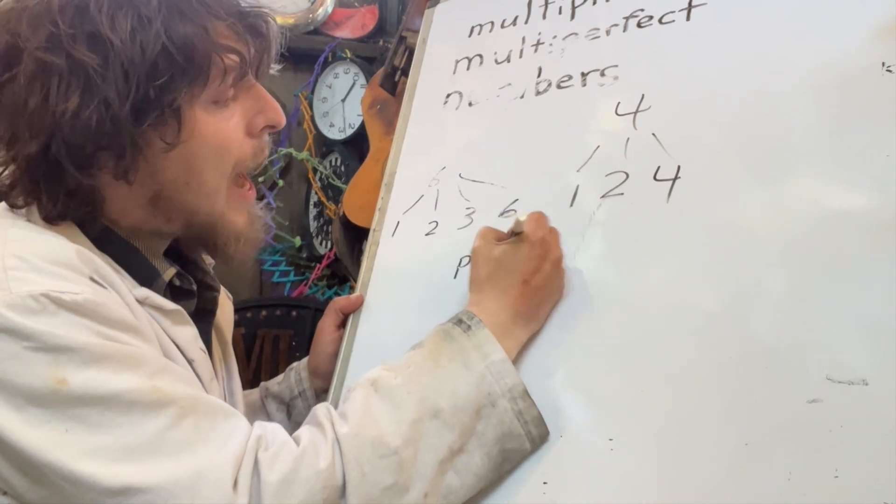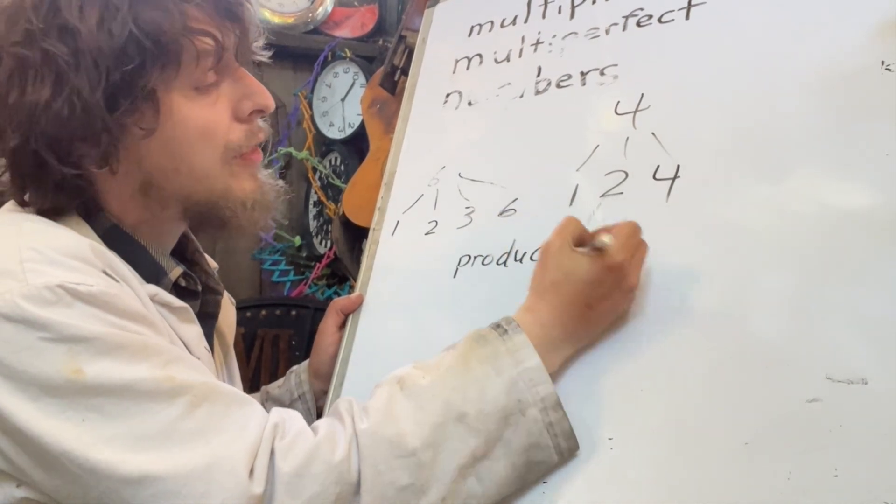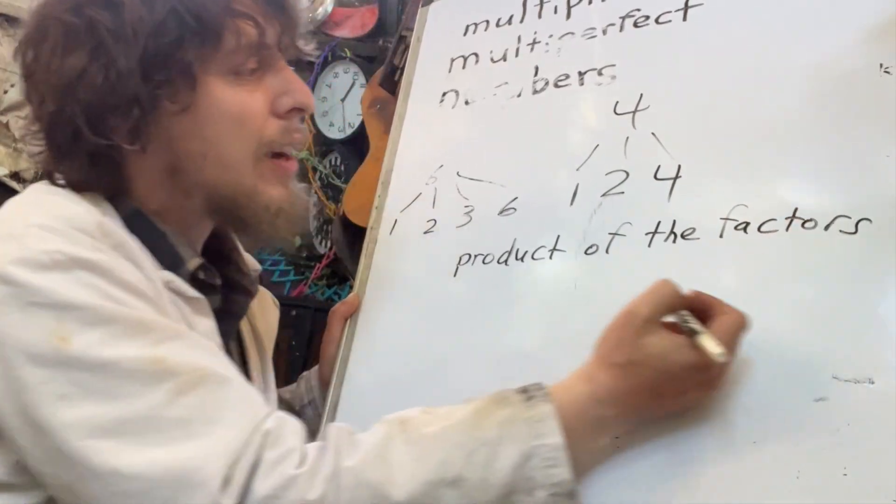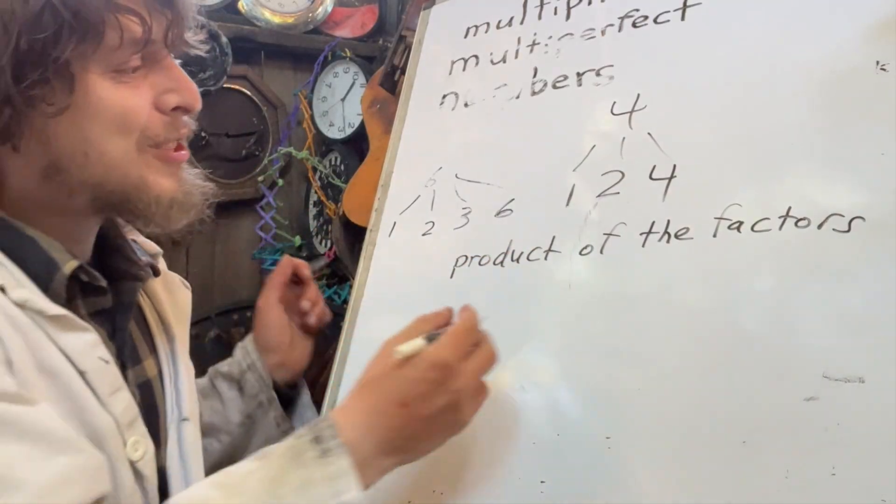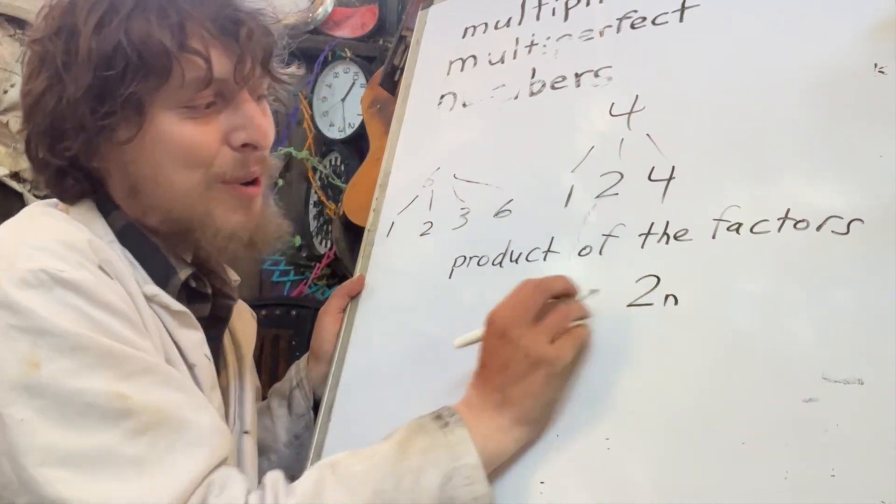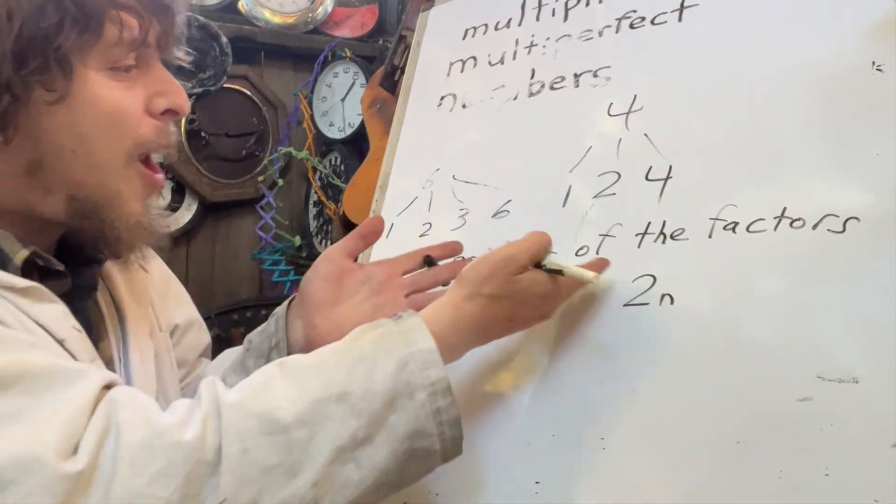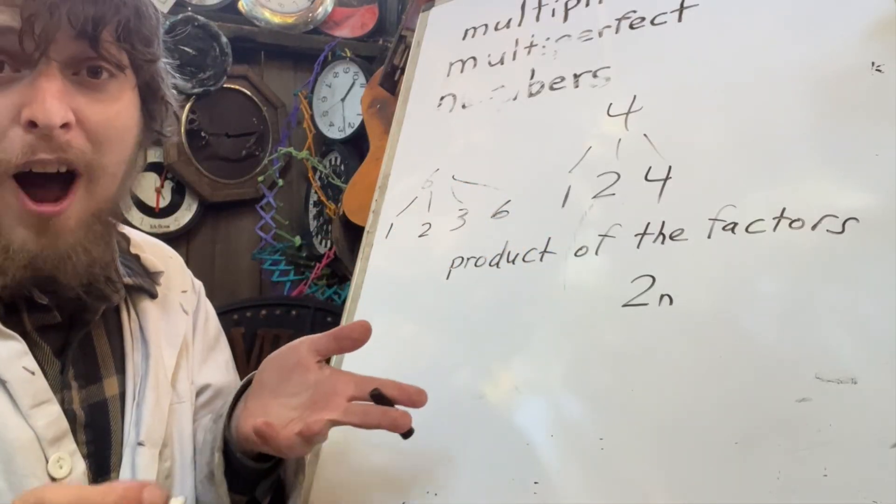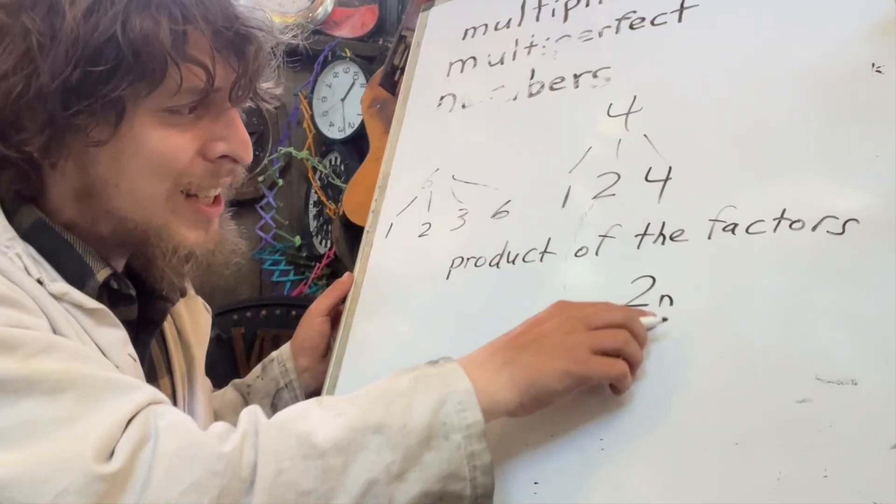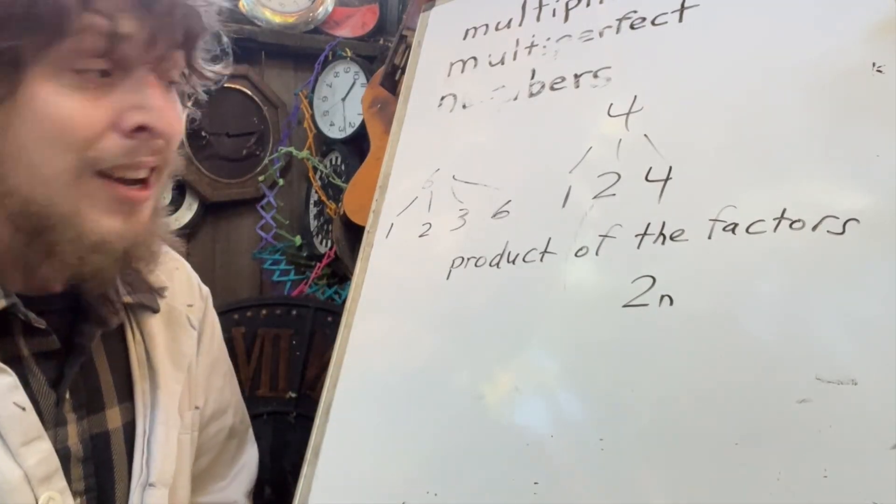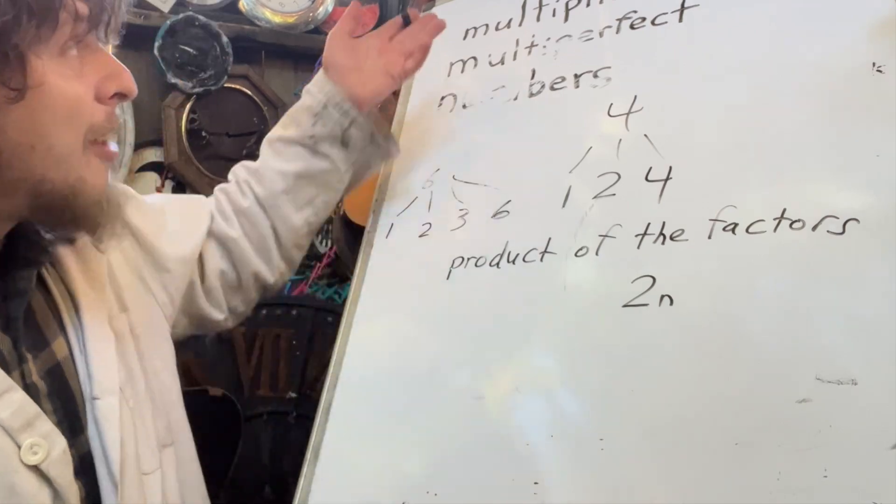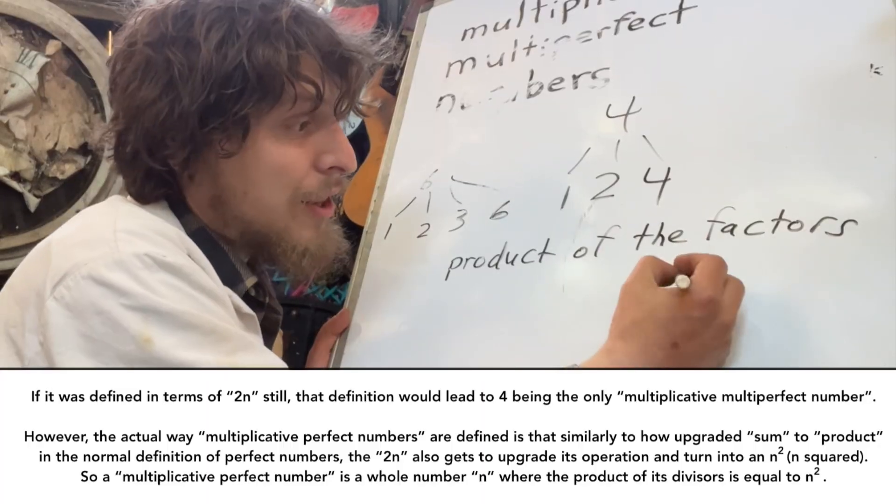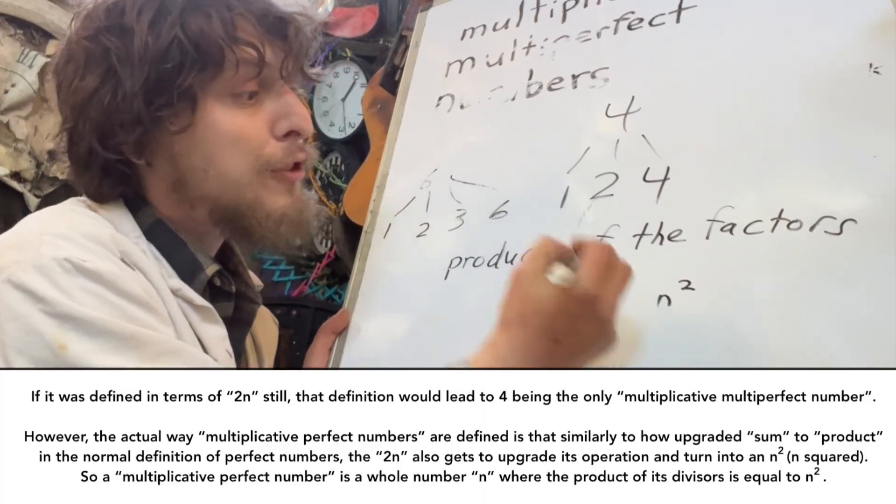Last time, we had the sum of the factors. So, now, if we had the product of the factors, and then we wanted to do something more fair to the should-be-twice-the-number-itself part, because we upgraded the sum of the factors to the product, that was like going up an operation level. And so, why didn't we let this part get to do that? So, the actual definition of this not very commonly used term is that the product of the factors is n squared, instead of 2n.